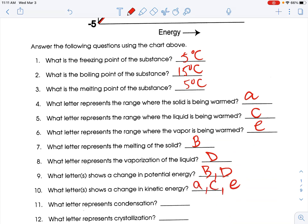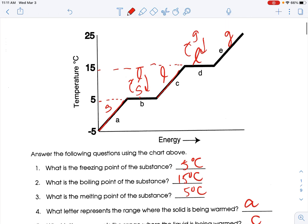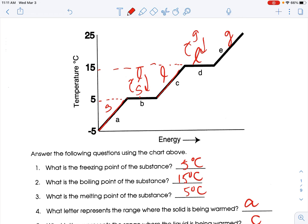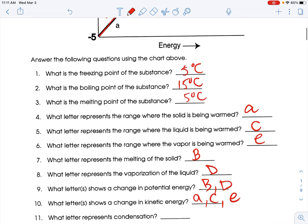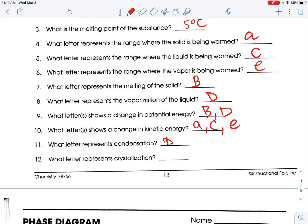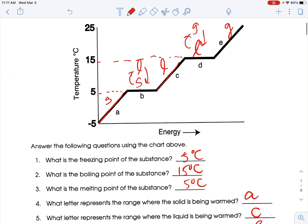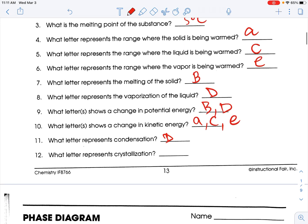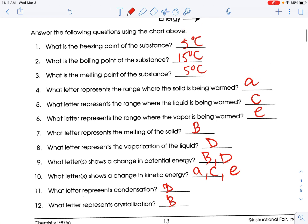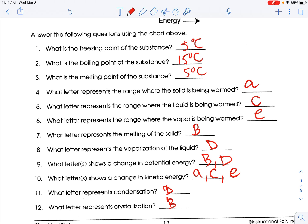Which letter represents condensation? Condensation is a gas becoming a liquid, so that would be section D. Which letter represents crystallization? That's going to be formation of crystals, which is a solid. So liquid to solid would be B. There are your answers to that sheet. Thanks.